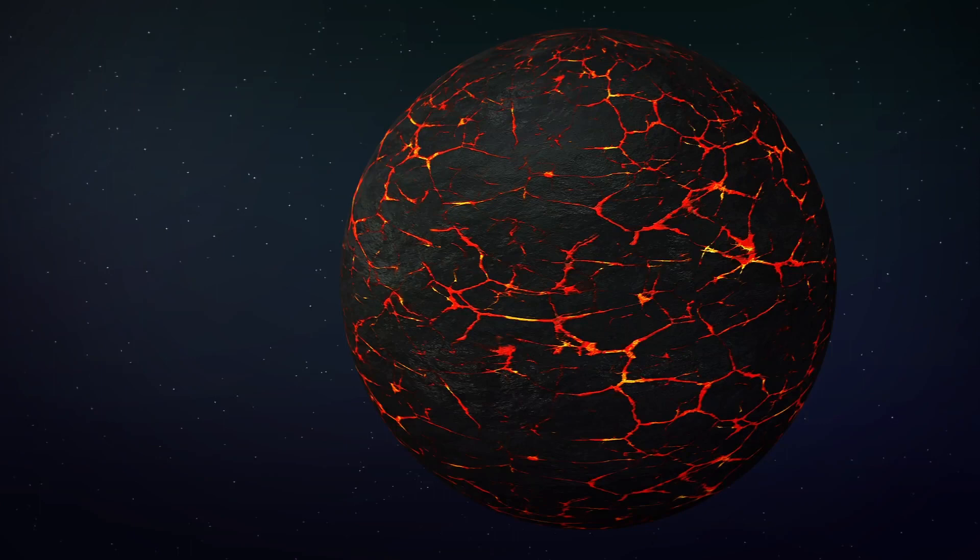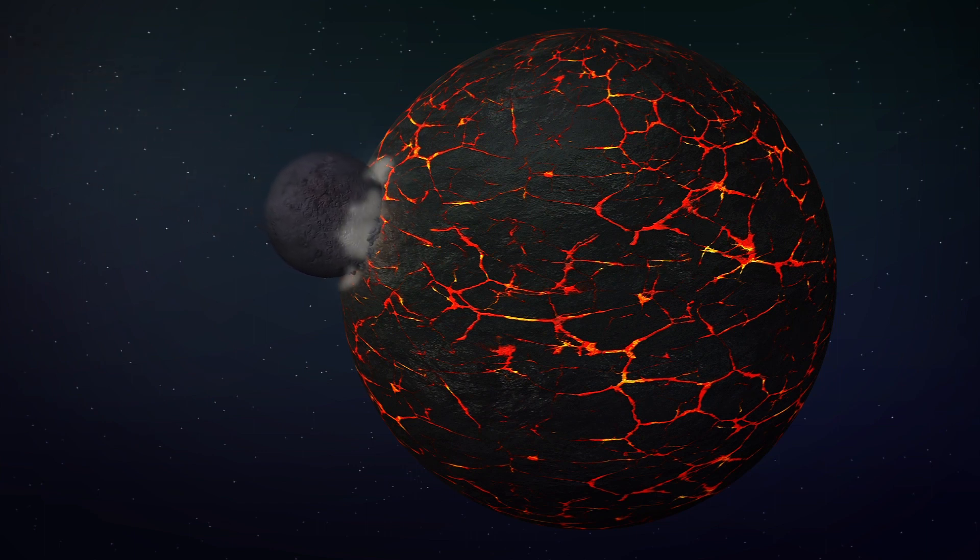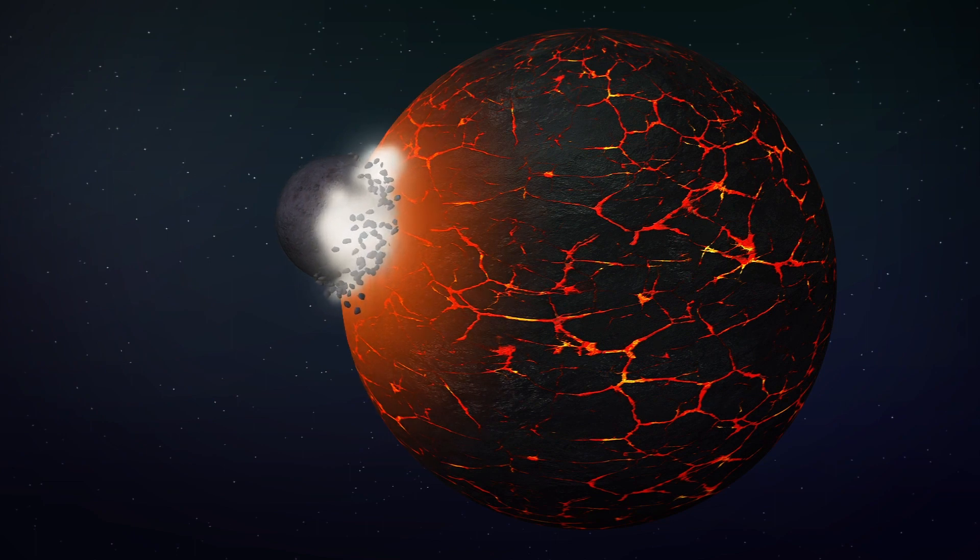According to a Rice University study published in the journal Science Advances, most of Earth's vital elements for life most likely came from a planetary collision that also created the moon more than 4.4 billion years ago.